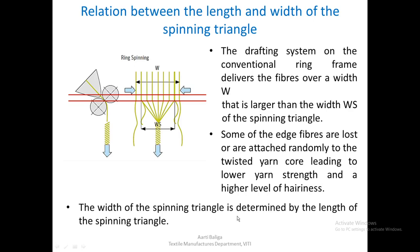The width of the spinning triangle is determined by the length of the spinning triangle. Therefore, one must look at the factors that affect the length of the spinning triangle in order to control its width.